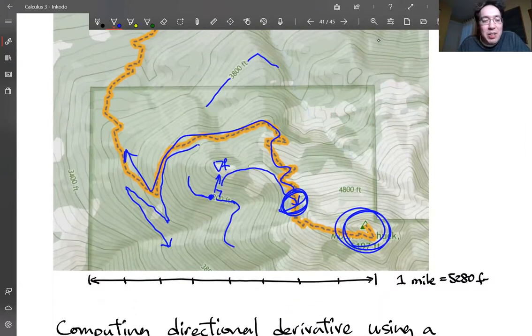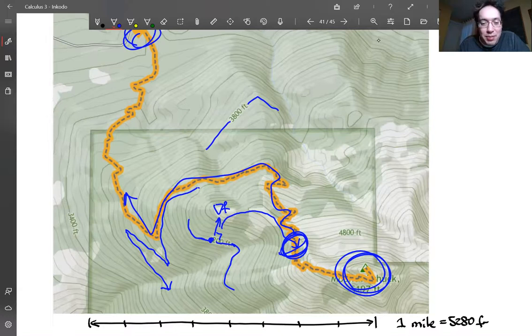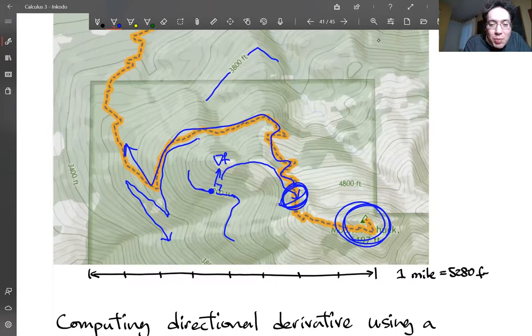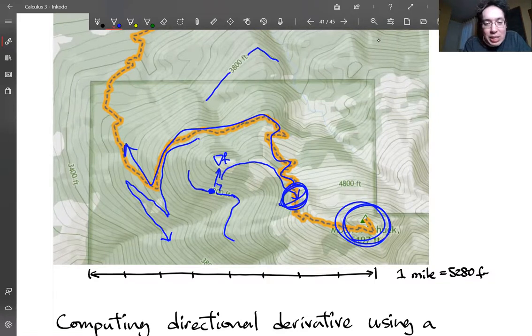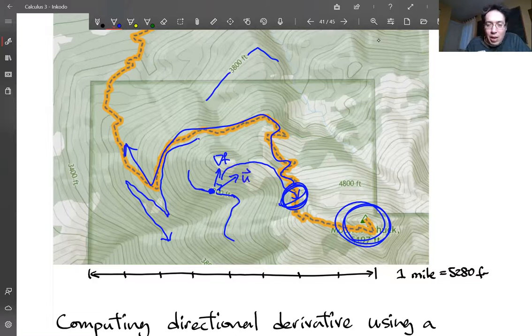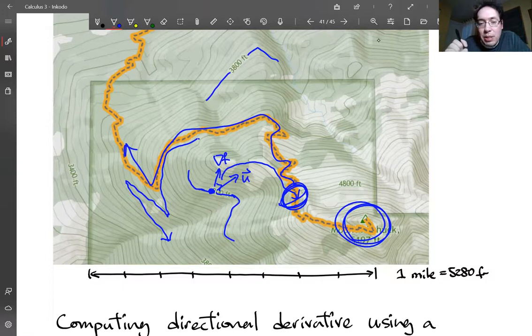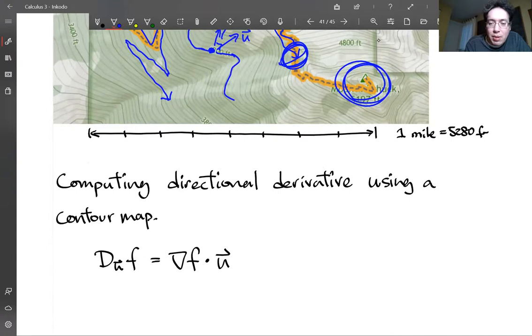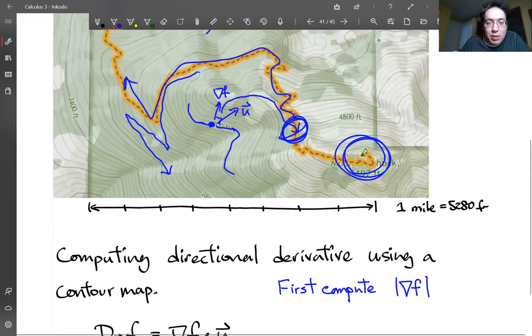So let's actually, now that we have this contour map, we could actually do some mathematics on this map. Let's compute some directional derivative. So let's say I was at this point at the 4,200 feet, and I was traveling, let's say it's not exactly in the gradient direction because that makes the computation a little bit too easy. Let's say I was heading that way. Okay. So how can I compute this? So the first thing I'm going to do is I'm going to compute the gradient magnitude.